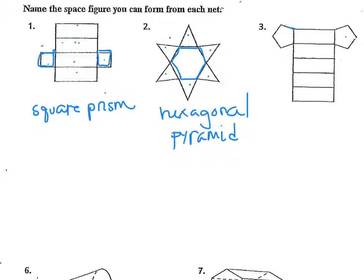And in our last picture, you can see these are the bases here on the sides — they would be parallel and the same size and shape. They have five sides, so it's a pentagon. The remaining faces are rectangles and there are two bases, so this is a pentagonal prism. Those are some examples of how to name and classify three-dimensional figures.